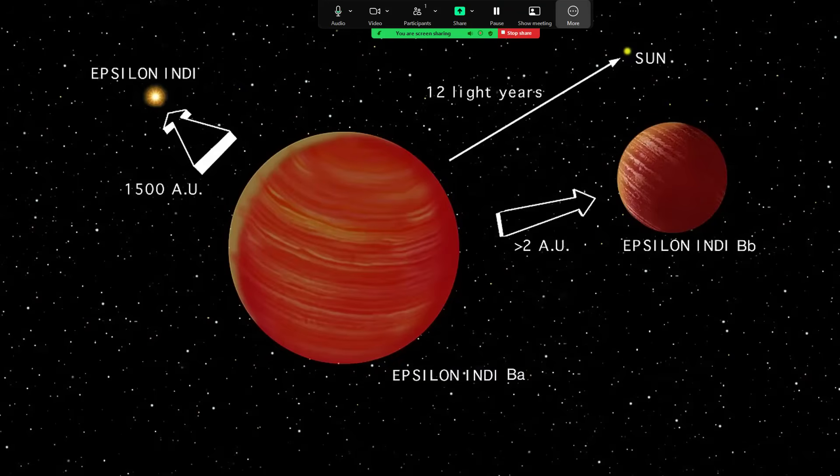We've got an artist's impression just showing what's going on here. The whole lot's about 12 light years from the sun. The pair of brown dwarfs orbit each other at a distance of about two astronomical units, two times the distance from the Earth to the sun, so 300 million kilometers. And they're about 1,500 astronomical units away from the main star there, Epsilon Indi A.